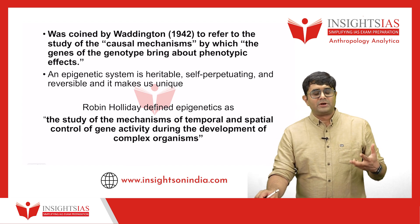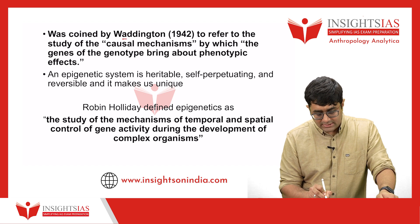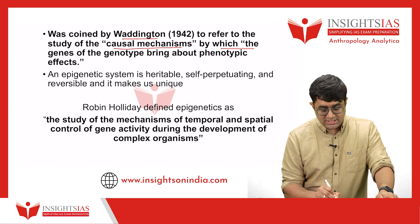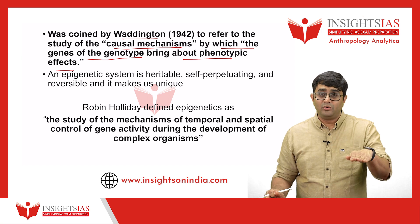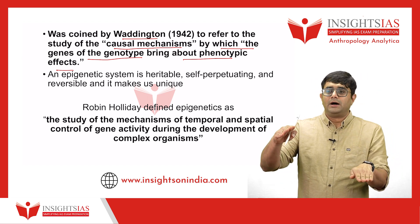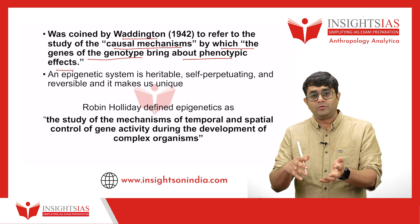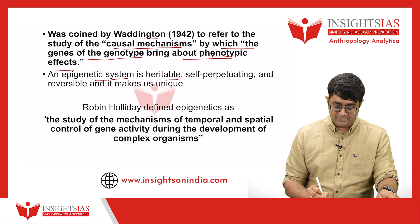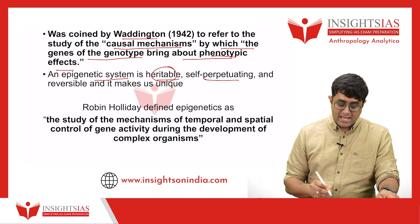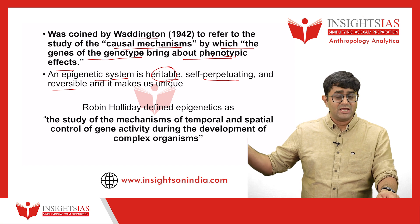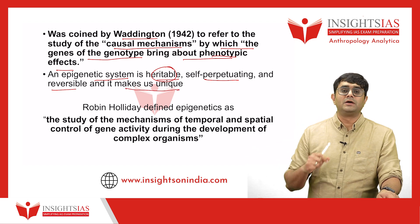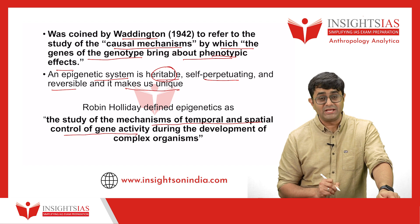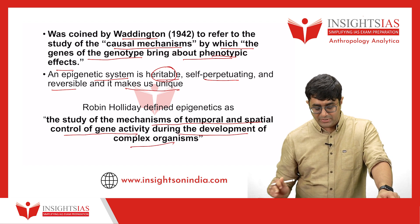Coming back to the history of epigenetics: the term was coined by Waddington in 1942, referring to the study of the causal mechanisms by which the genes of the genotype bring about phenotypic effects — that is, how the genotype is expressed to give rise to a phenotype. An epigenetic system is heritable — meaning inherited or self-perpetuating — and it is also reversible. When environmental conditions change, it can reverse, and this is what makes us unique. Another definition is the study of the mechanism of temporal and spatial control of gene activity during the development of complex organisms.